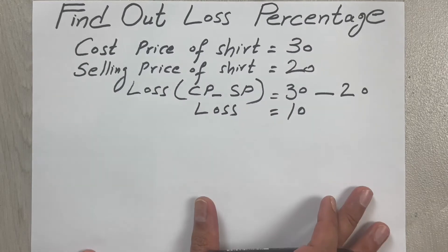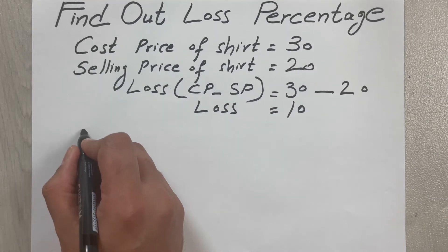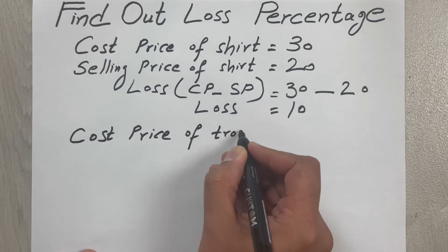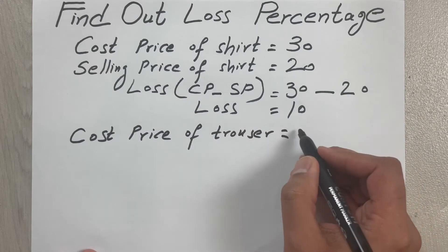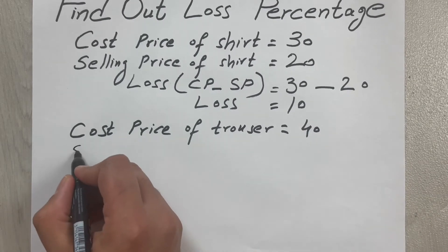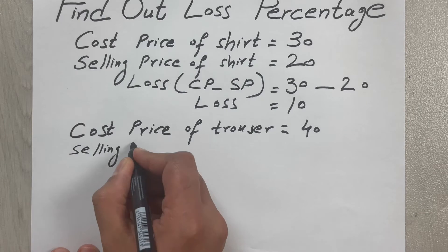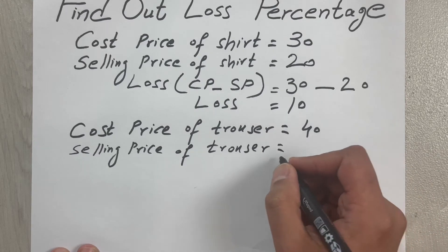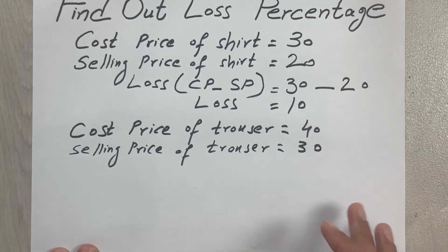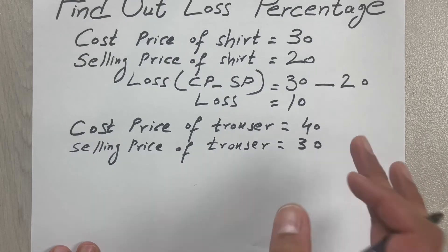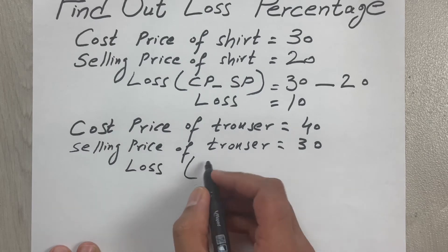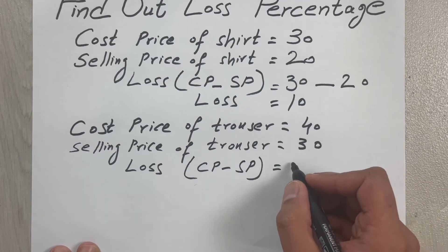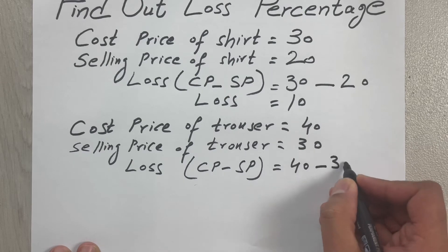Now we move to a second deal. Let's say we have a trouser and the cost price of that trouser is 40, and the selling price of that trouser is 30. You can see the cost price is 40 and the selling price is 30. Again we apply the loss formula: CP minus SP. Cost price is 40, selling price is 30, so 40 minus 30 is 10.